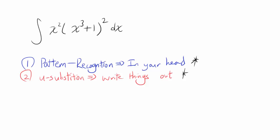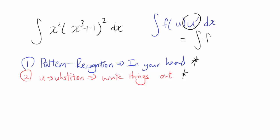So let's start with pattern recognition. When you have the integral of some function of some expression u, and you have the derivative of u and dx, you can consider the derivative of u as going away, and integrate with respect to u as you've always done. So let's consider this: what is our u? U is the function inside, which is x cubed plus 1.